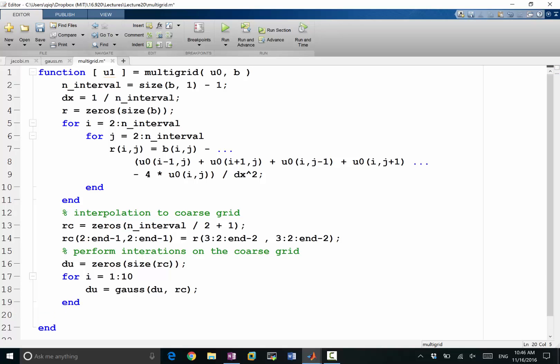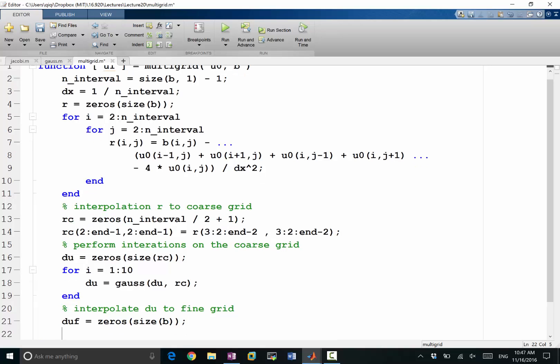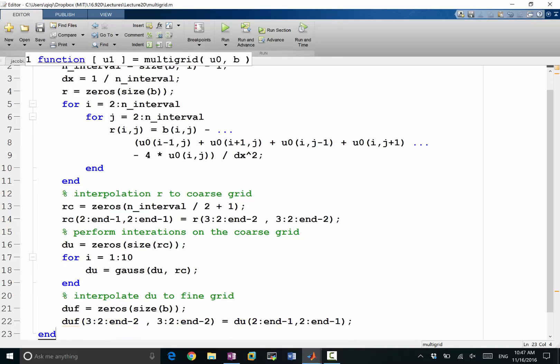Afterwards I'm going to interpolate the du to fine grid. So here I want to interpolate the residual to the coarse grid fine grid. So interpolating the correction to the fine grid. du_f, that's my fine grid, is equal to zeros the size of b. Here I really need interpolation because my coarse grid is only a fraction of the grids I have on the fine grid. So du_f does have some places where I don't need interpolation. These are the same points where I can just copy the values from du 2:2:end-1, 2:2:end-1.